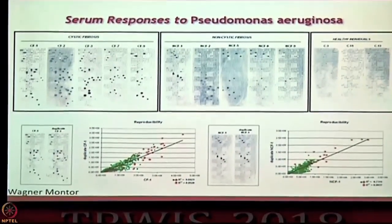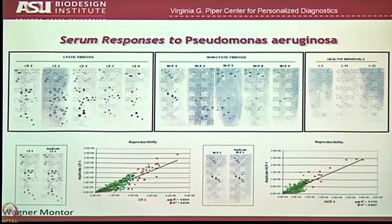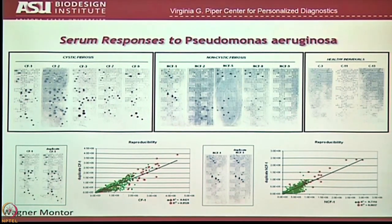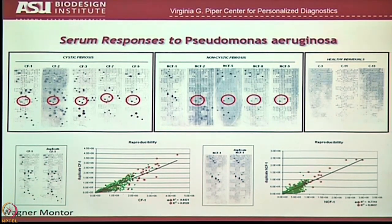Then you can ask the question: are there common responses? Because if you're going to make a vaccine, you want it to be one that's common and works for most people. He took a number of patients with cystic fibrosis who had documented pseudomonal infections, a group of non-CF patients who still had documented infections, and healthy controls. This shows the responses were very reliable from chip to chip. If you look carefully, you'll start to see a pattern emerge — certain features show up over and over again. That pair there is there, there, there — those two spots are the same protein, everybody's on duplicate, they show up repeatedly. That's a sign that that particular protein is immunodominant.